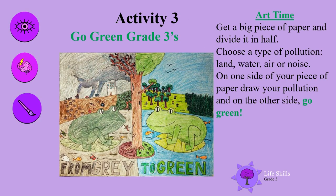Activity three: Go green, grade threes! That sounds so good. Right, it's our time. Get a big piece of paper and divide it in half. Choose a type of pollution — land, water, air or noise. On one side of the piece of paper draw your pollution, and on the other side go green, guys.